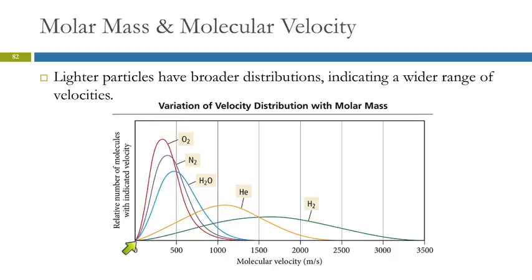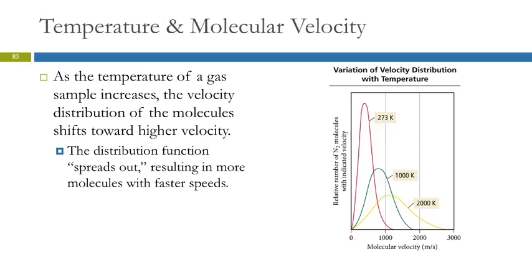There's another interesting difference, is that as you get these smaller particles, they have a much broader distribution. So, hydrogen, you would have hydrogen molecules that are traveling at all kinds of different speeds. Overall, the average is higher. Oxygen, the larger molecules, are going to have a much tighter distribution. So, not as much variation.